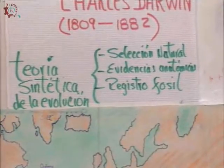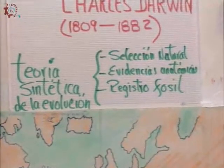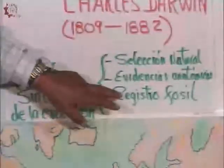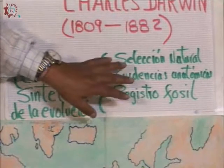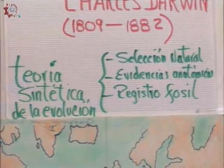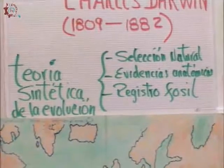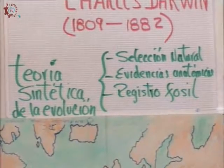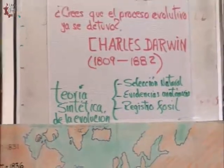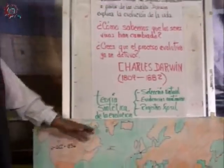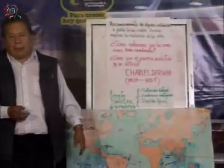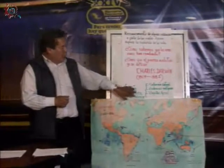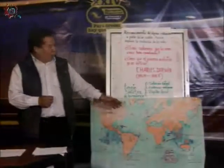Darwin se basa en la teoría sintética de la evolución, que se basa en tres aspectos: uno, la selección natural; dos, evidencias anatómicas y el registro fósil. Esta teoría nos dice que las poblaciones crecen según la cantidad de alimentos que el entorno les ofrece y el espacio que tienen para vivir; que sobreviven los más adaptados —el que no se adapta no va a sobrevivir y la especie se va a extinguir— y que las especies con mayor sobrevivencia van a dejar mayor cantidad de descendientes.